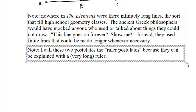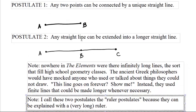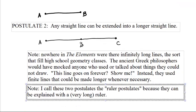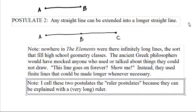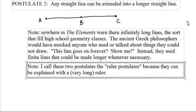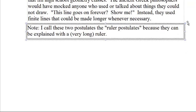So I call these two postulates ruler postulates because they can be explained with a very long ruler. You give me two points, put the ruler across it, draw the line between them. You give me a straight line, line the ruler up with it, and you can extend the line out. There's always some fudging involved, but you can be fairly careful. You can't be perfect, but whatever.